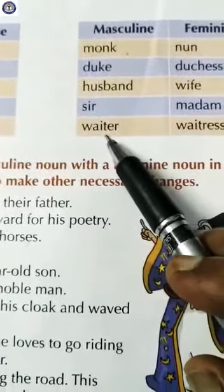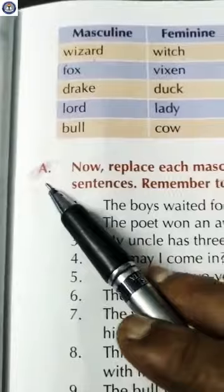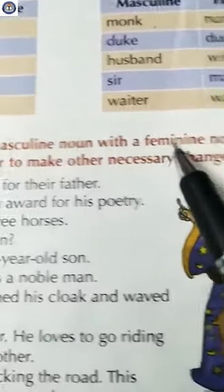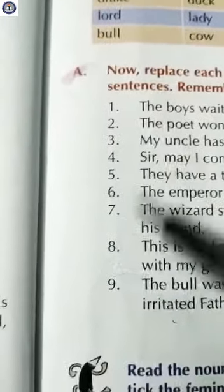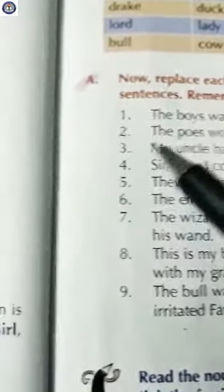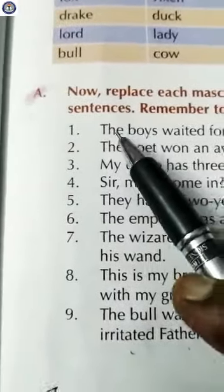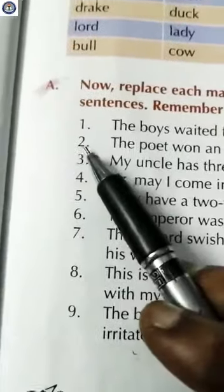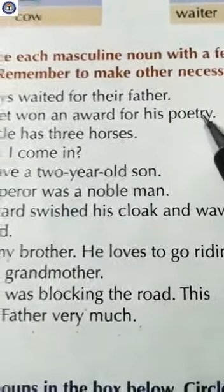Now, exercise A: replace each masculine noun with a feminine noun in these sentences. Children, you have to change these sentences into feminine gender. Number one: 'The boys waited for their father.' Answer: 'The girls waited for their mother.' Number two: 'The poet won an award for his poetry.'